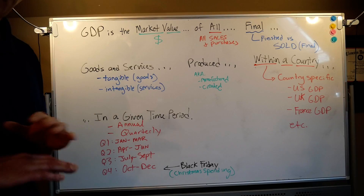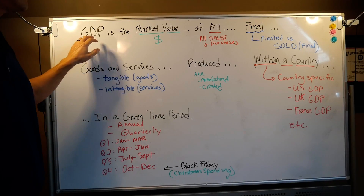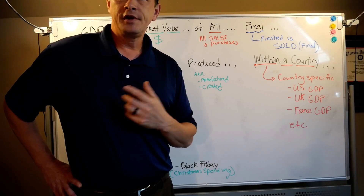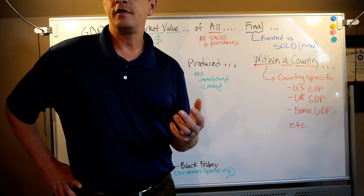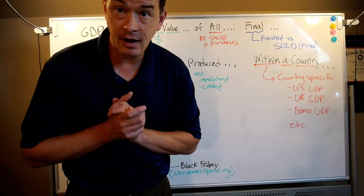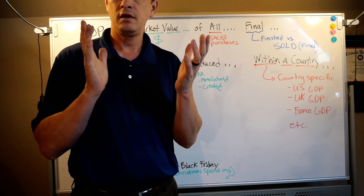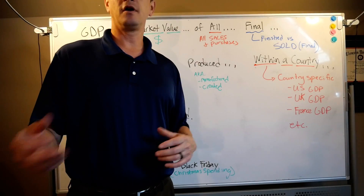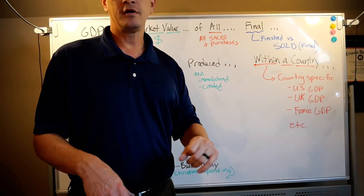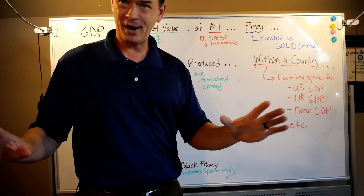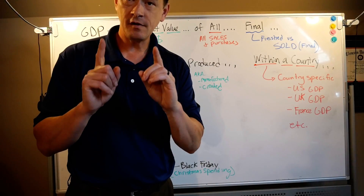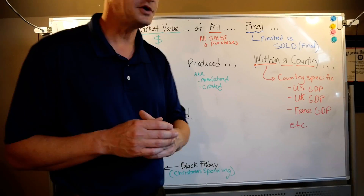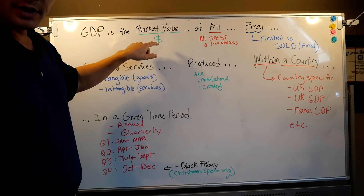Let's break down that definition word by word. GDP is the market value. Why market value? We're dealing with automobiles, shirts, Netflix subscriptions, groceries — bread, bananas, apples, and oranges. You're literally comparing apples and oranges. The only way to do that is by their one commonality: price. Everything you buy — whether a good or a service, a Ford Escape or a new running watch — has one common thing: dollar value. They all have a price they sell at. We measure everything by leveling the playing field with dollar value.